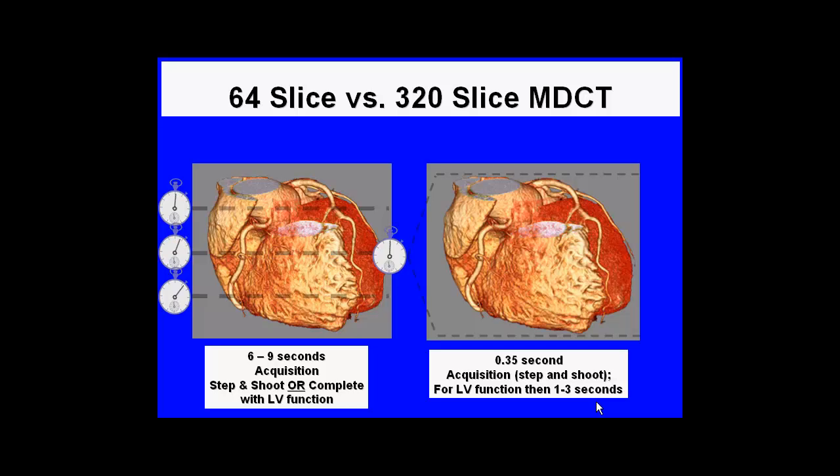There is a big difference in terms of the time required to acquire the images — about six to nine seconds using step-and-shoot or complete retrospective imaging using a 64-slice scanner — whereas for a 256 or 320-slice scanner, one can acquire images throughout the entire heart in approximately one to three seconds.